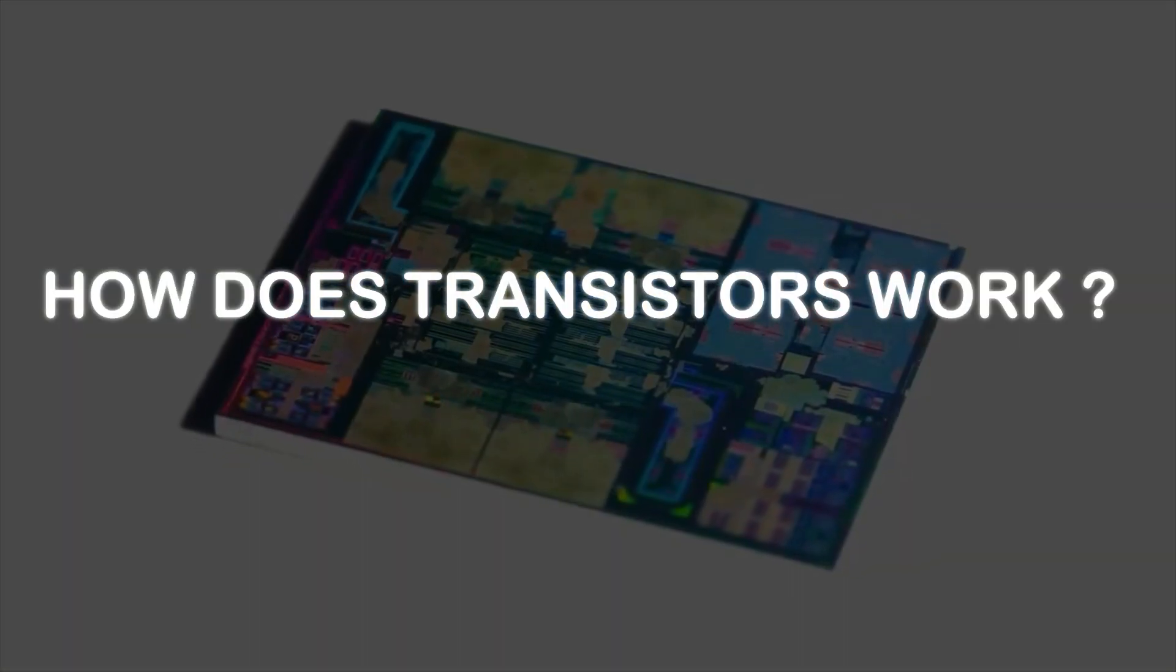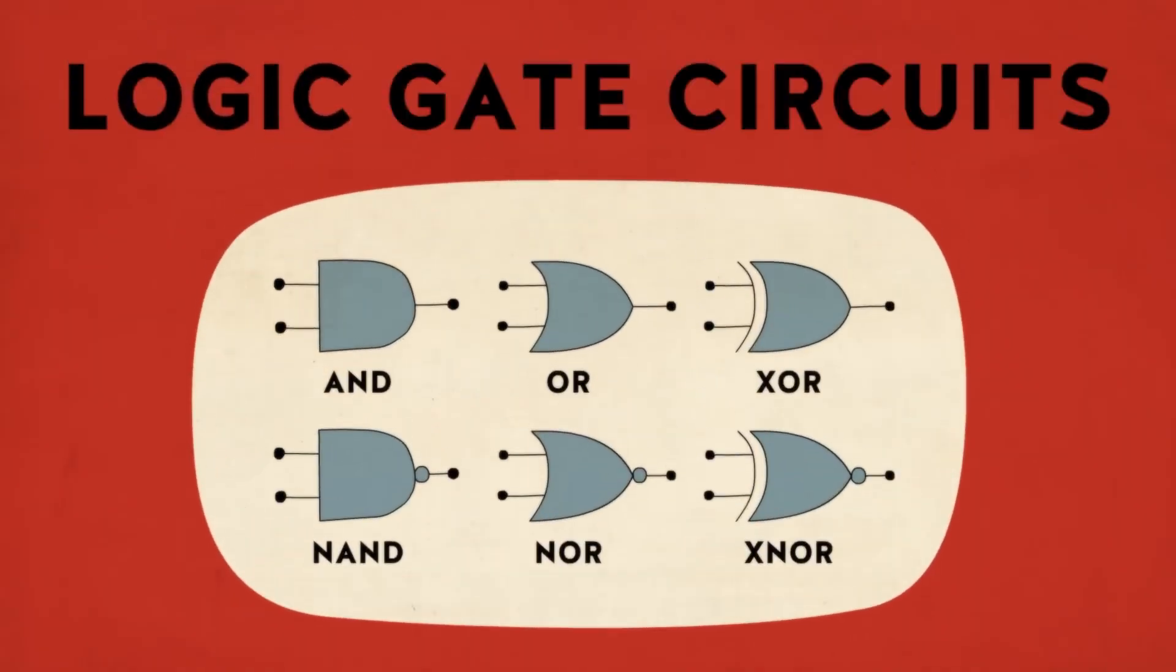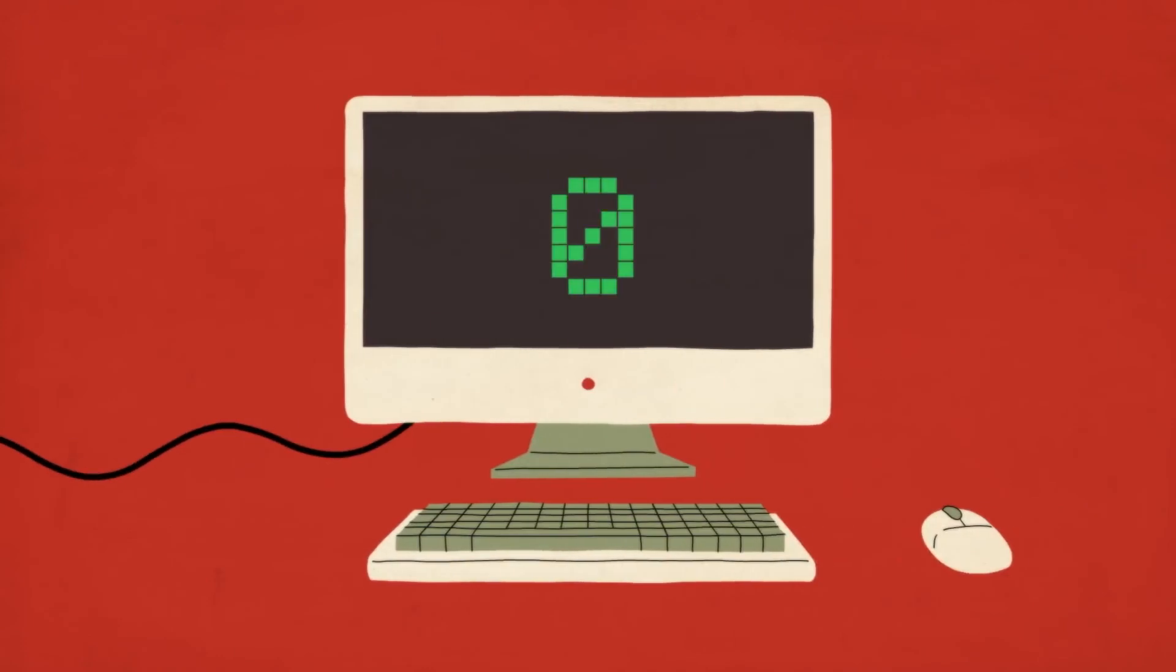But how do transistors work inside your computer? If you put a few transistor switches together, it will form something called a logic gate, which can compare various input currents and give different outputs.